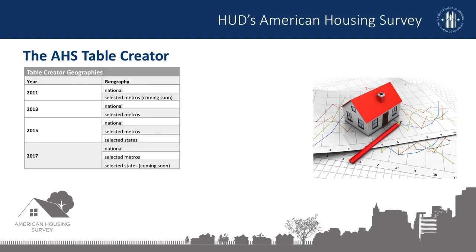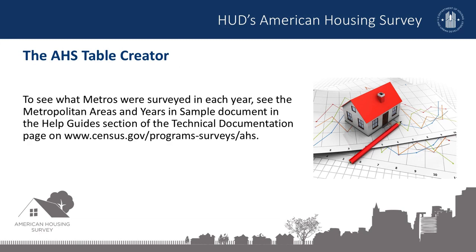In the Table Creator, you can build tables using national data or use geography filters to narrow the scope of your tables. Once you select a geography, the Select Year drop-down menu will show which years are available for that geography. To see what metros were surveyed in each year, see the metropolitan areas and years in sample document in the help guide section of the technical documentation page on www.census.gov.